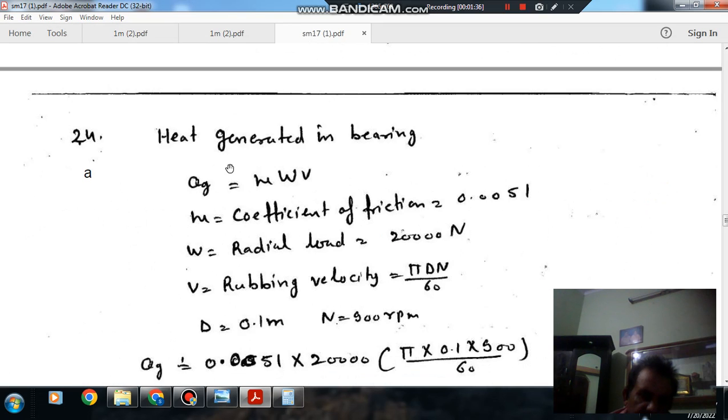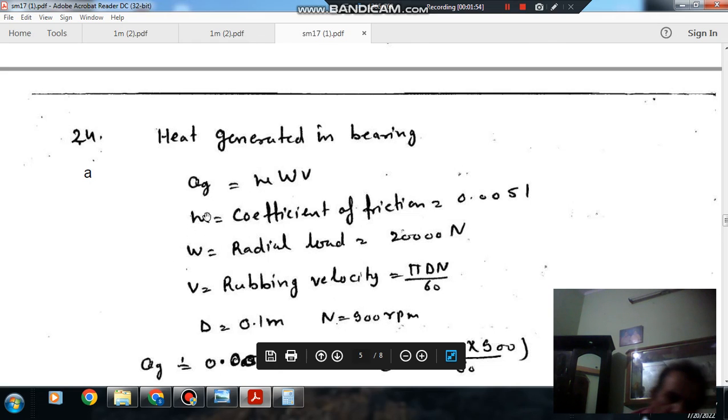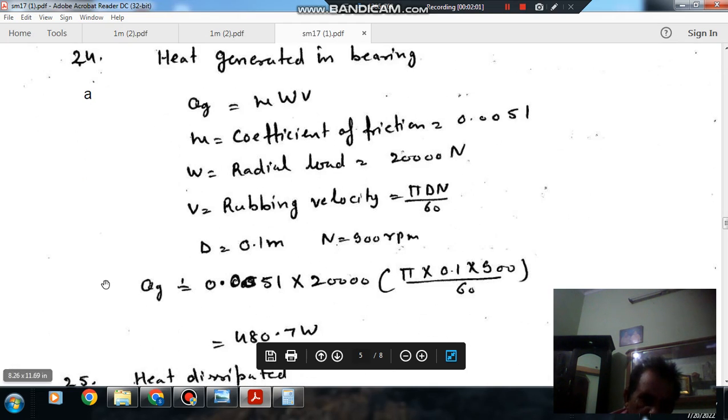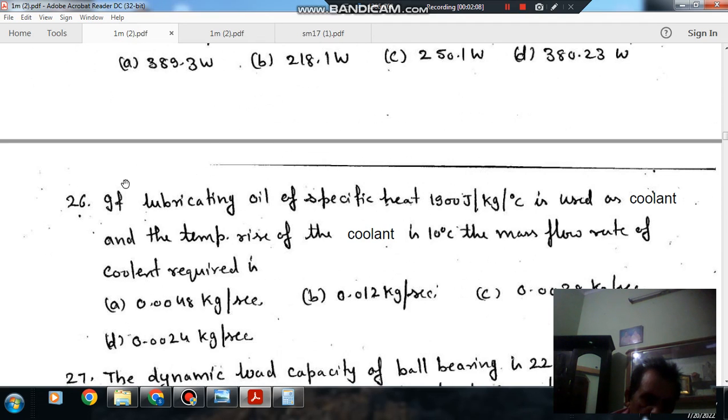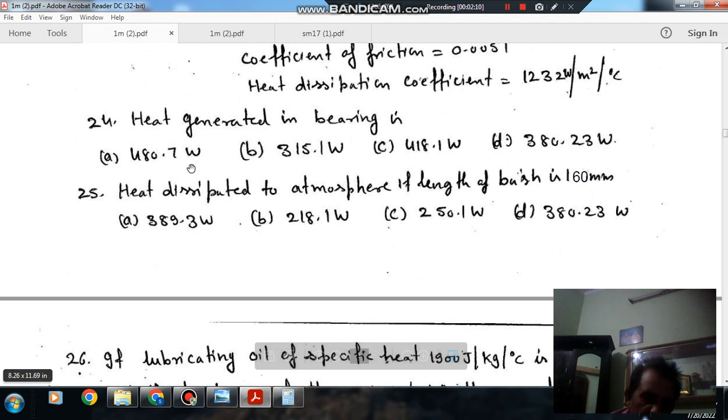So here is the bearing, QG is equal to mu W V. Here mu is coefficient of friction that is 0.0051. Now we have all these three quantities because these are given and V we have calculated. So heat generated we can find out, that is 480.7 Watt. So answer to question number 24 is 480.7 Watt.